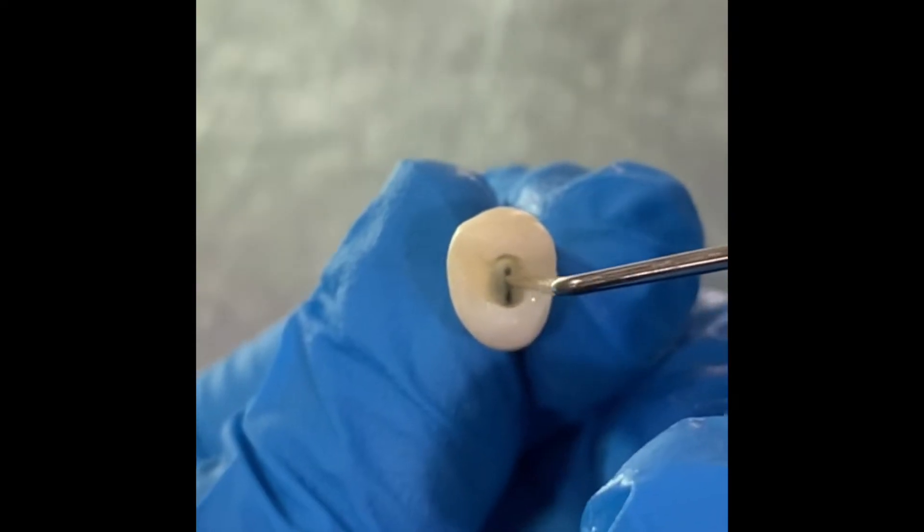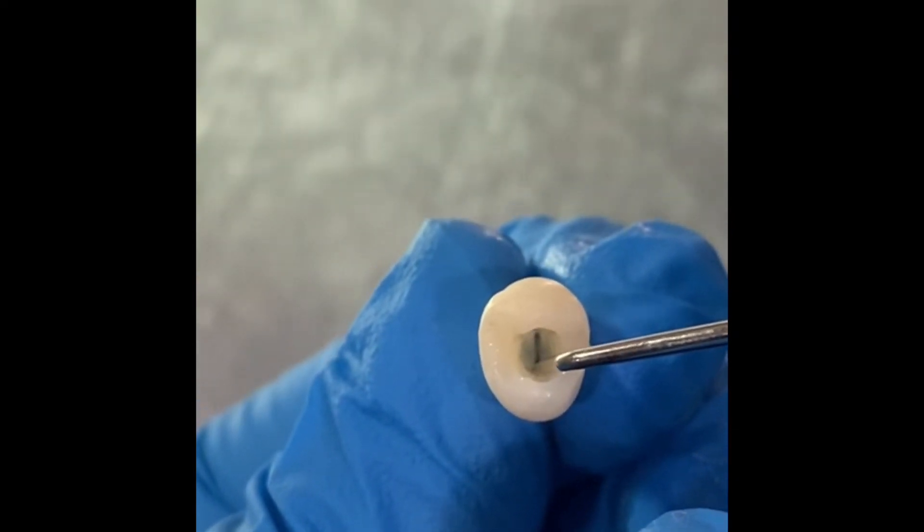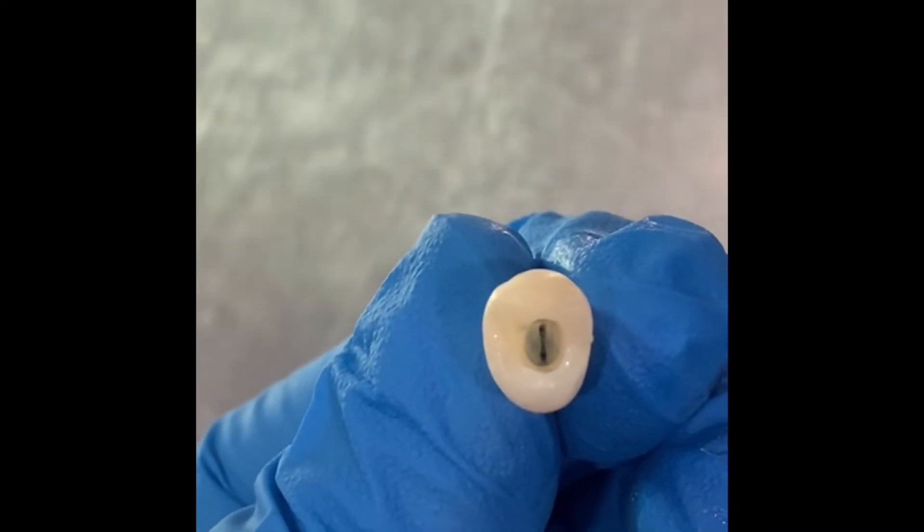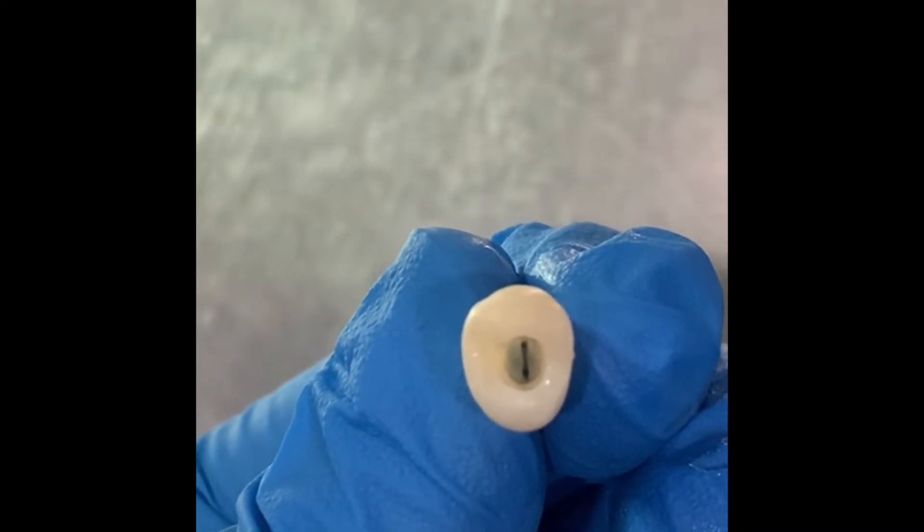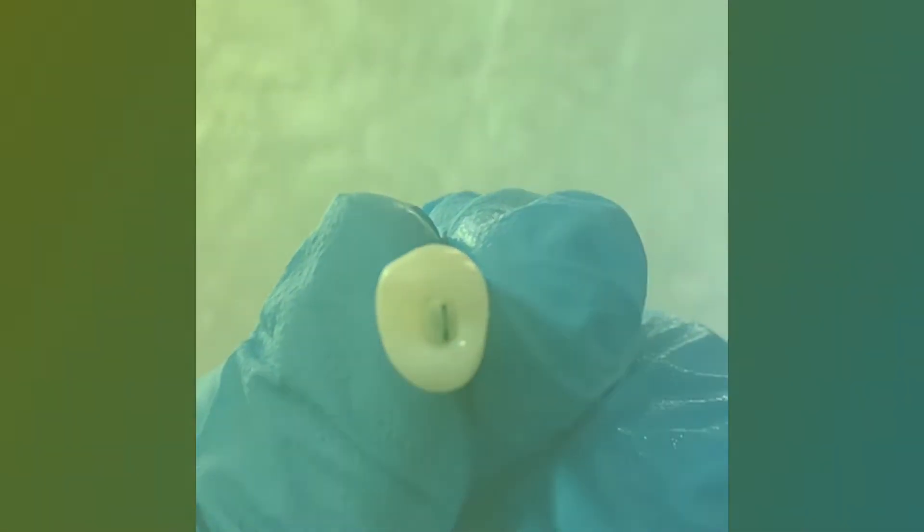Our access cavity is done. The buccal and lingual orifices of the two canals can be easily seen. The access cavity is oval shaped as we wanted it to be and we proceed to our next steps.